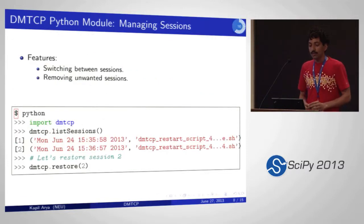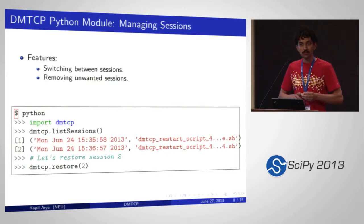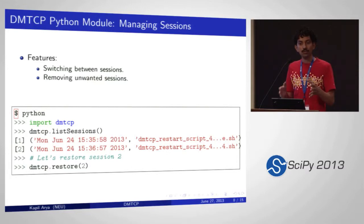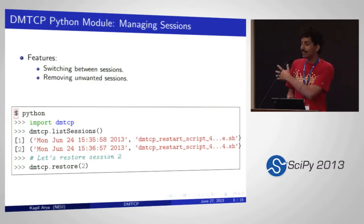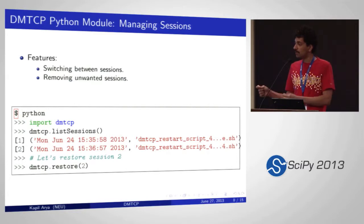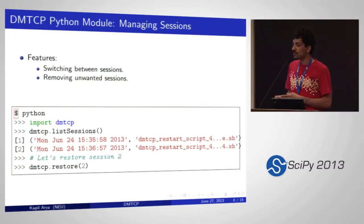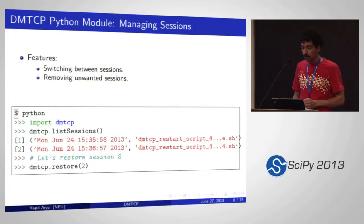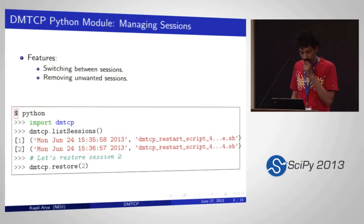The Python module can also be used to manage sessions. If you're running and took a bunch of checkpoints, you can see all the checkpoints, delete one of the sessions, rename them, and so on. Right now it's primitive — it shows a list of all the sessions — but you can imagine a tree-like view showing ancestor and child checkpoints. This is all inside a very simple Python module for DMTCP.